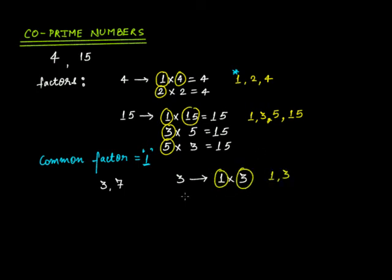And if you take 7, you have 1 times 7. You have only 2 factors, 1 and 7.